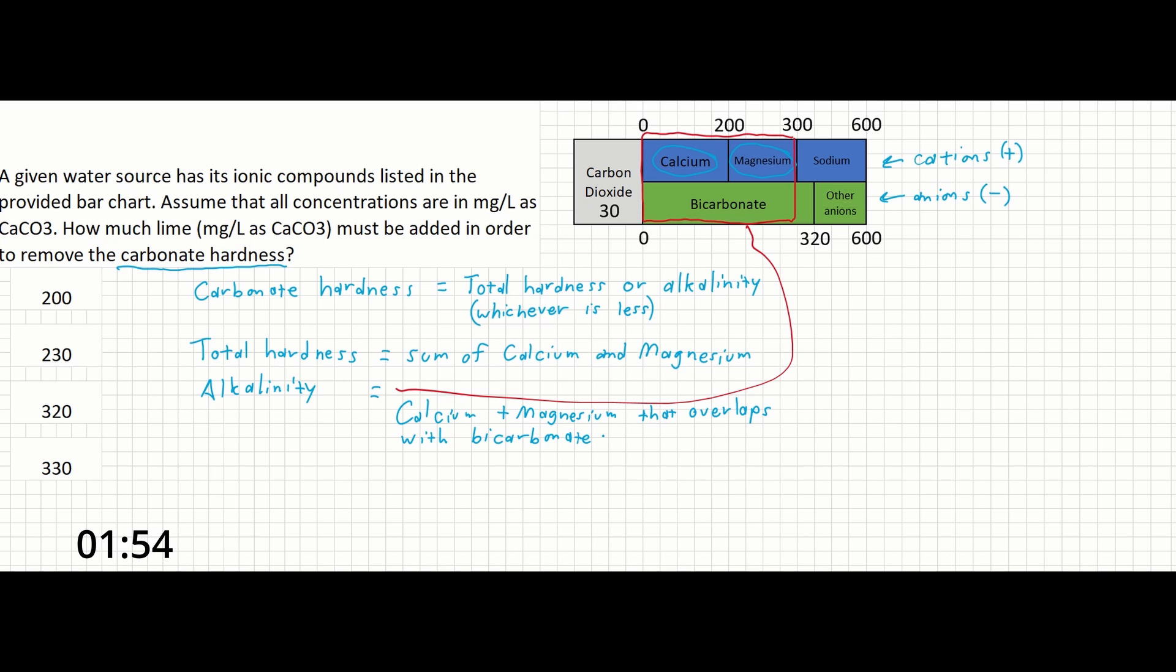Carbonate hardness can be removed with the addition of chemicals like lime. Noncarbonate hardness typically requires more advanced treatment methods such as ion exchange.